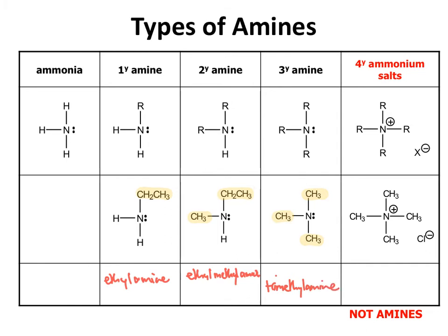Ammonium salts are not amines, but we can make them from amines and they may appear as products. If this had been ammonia reacted with hydrochloric acid, we'd call it ammonium chloride. Here we name the ammonium salt by indicating what alkyl groups are attached — so four methyl groups gives us tetramethylammonium chloride. You're naming it as you would normally name an ammonium salt, just putting the relevant alkyl groups in front.